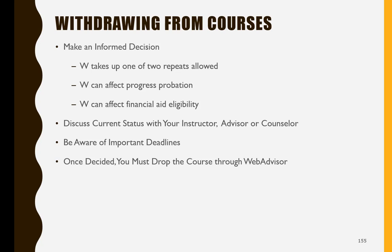If you're struggling in a course or have unexpected life circumstances preventing you from being successful, withdrawing from a class might seem like the best solution. But before you drop the class, be sure you're making the best choice. Do you know a W takes up one of the two repeats allowed to pass a course? That a W can put you on progress probation? And a W can affect your financial aid eligibility? Before you drop a class, discuss your situation with your instructor, an advisor, a counselor, or all of them. They can help you think through all the consequences of dropping a class so you can make an informed decision.